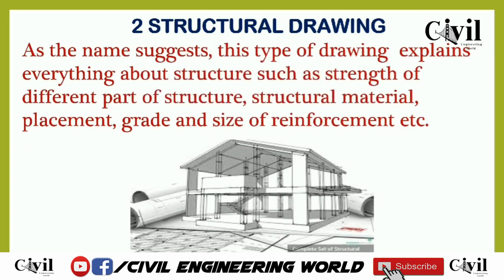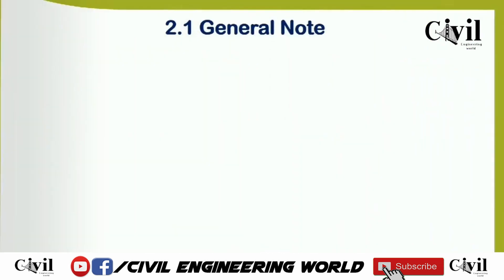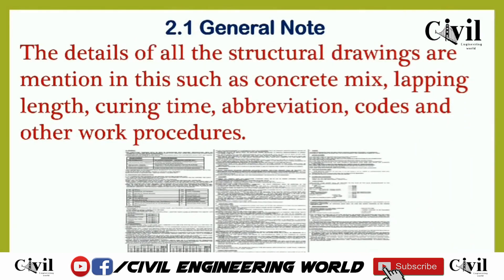The second most important type of drawing is the structural drawing, which explains everything about the structure — the strength of different parts, material placement, grade, and size of reinforcement. This drawing is made by a structural engineer. It includes general notes covering lapping length, concrete mix designs, abbreviations, important codes, and other work procedures used by the engineer.